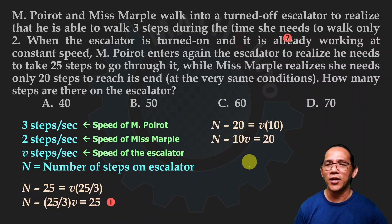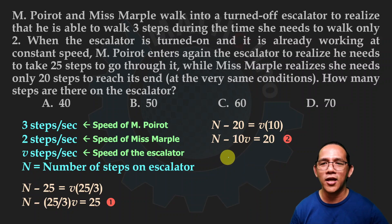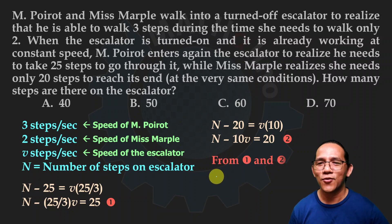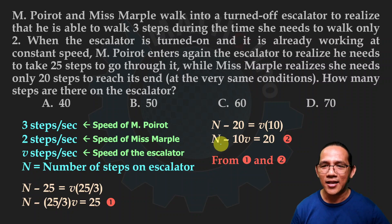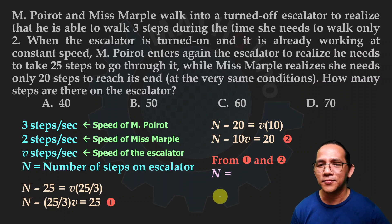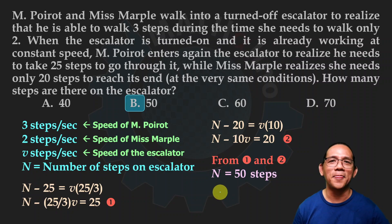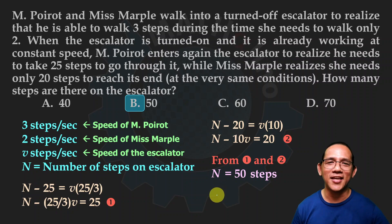Equation one and equation two. Solve using a calculator capable of handling two equations simultaneously. Let n represent x in your calculator. Our answer: the escalator has 50 steps — 50 baitang.